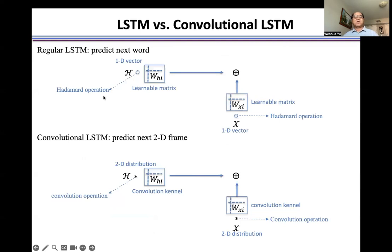And here, for example, in the regular LSTM, here is the hidden state. Here is the input both 2D frame or image. So right now, in regular LSTM, we define a learnable matrix. Because in regular LSTM, this is a 1D vector. We just use this matrix, operate on this input 1D vector.